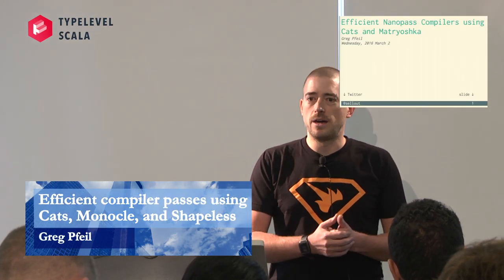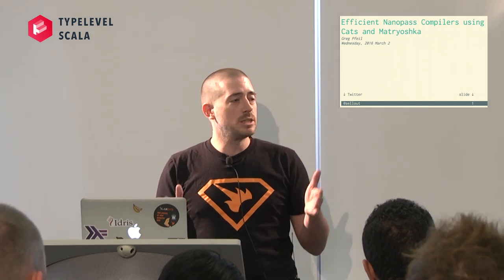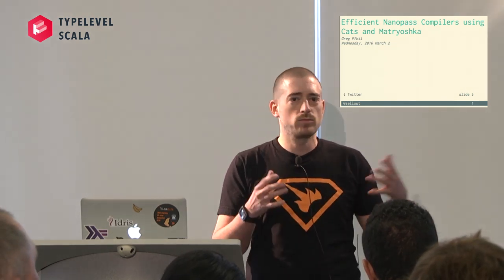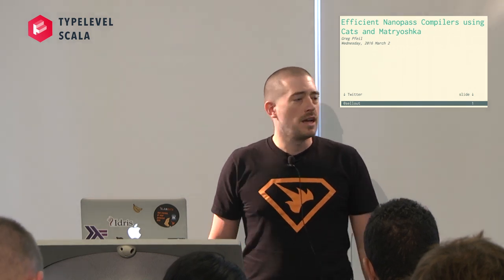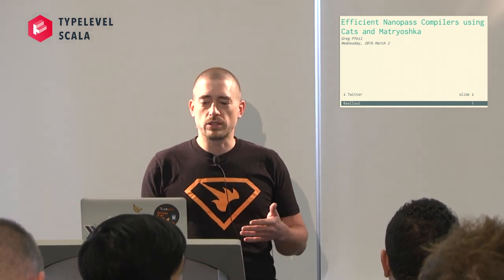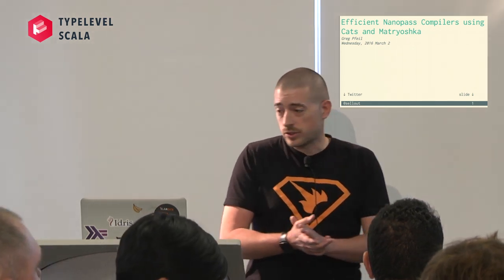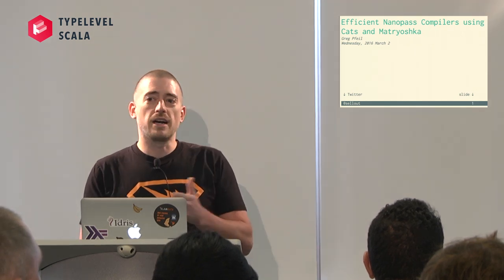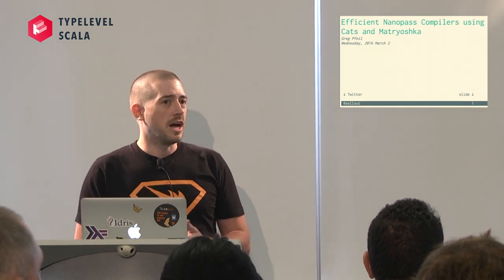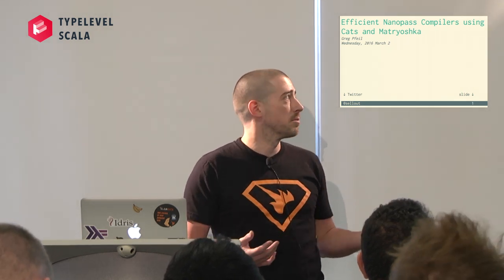I work at a company in Boulder called SlamData. We do analytics for NoSQL stores, but from my perspective, it's basically a compiler company. I compile from a multidimensional relational model to NoSQL store query languages or whatever APIs. This talk describes how we do that using some type-level stuff and some, hopefully, future type-level stuff. It's not compiler-specific — a lot of this works any time you're dealing with recursive data types.